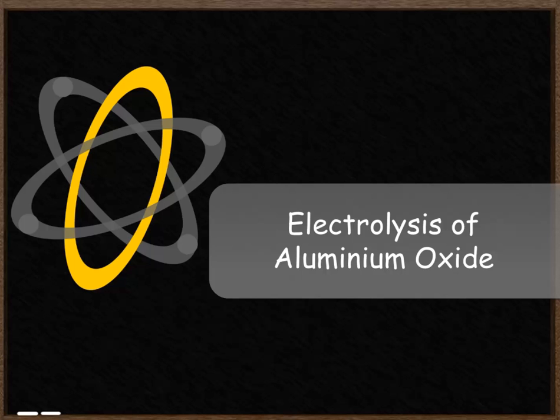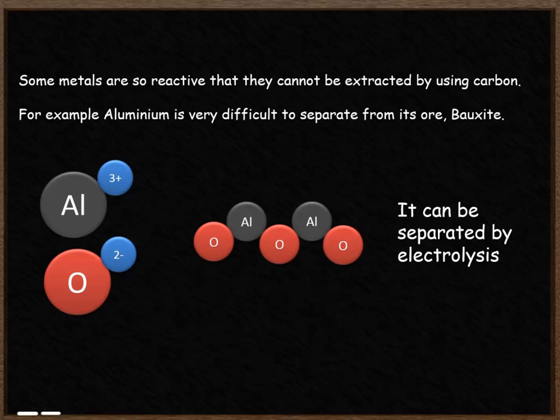In this video we're going to look at the process of electrolysis, specifically for aluminium oxide. Some metals are so reactive that they can't be extracted using carbon because they're more reactive than carbon. Aluminium is one of those metals. It's very difficult to separate from its ore, which is called bauxite.